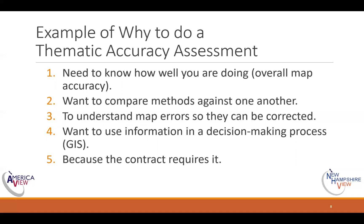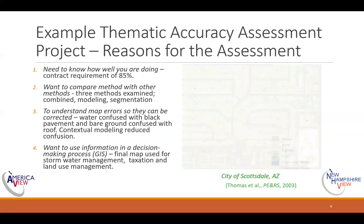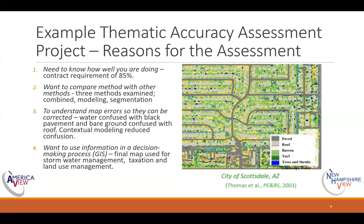Here's a little example. This is a project done in the city of Scottsdale, Arizona, published in Photogrammetric Engineering back in 2003. They were interested in water usage in the city — looking at runoff and stormwater management plans. You'll see that all five reasons for doing an accuracy assessment are documented here, even though it's only listed as four, because number one combines both.